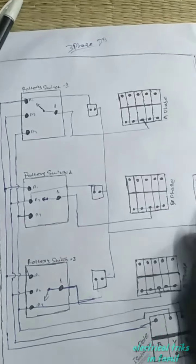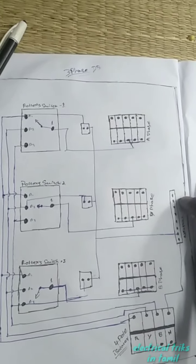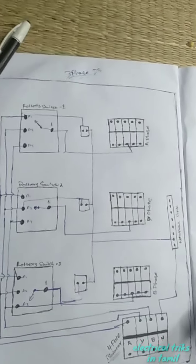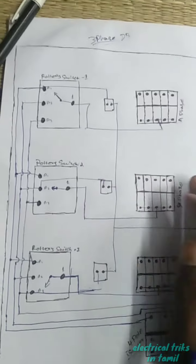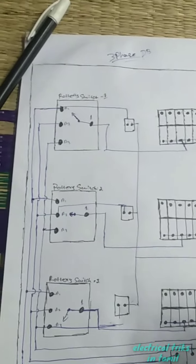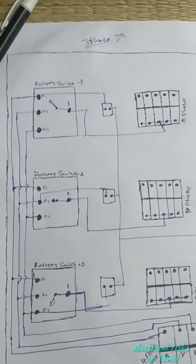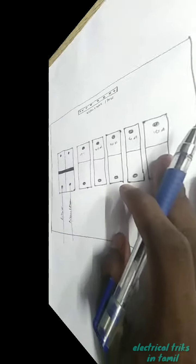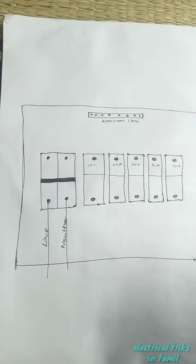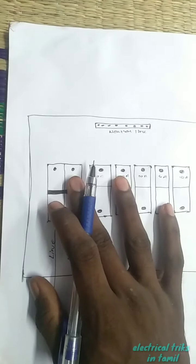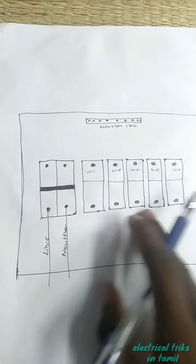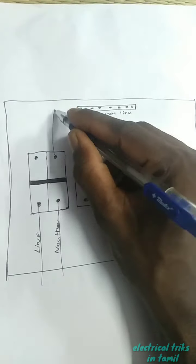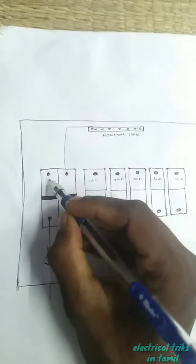This is the DB box connection, so you can use it as a neutral link. You can use it as a 3-phase DB box. You can use it as a single-phase DB. There are 3-pol and 2-pol MCPs. The neutral link and phase connections are on the left side.